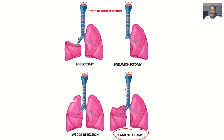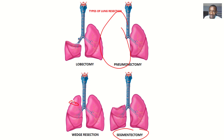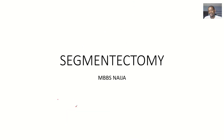Pneumonectomy is removing one whole lung. Wedge resection is more like there's a small tumor, so you just resect that specific place. That's just the difference between these surgeries.